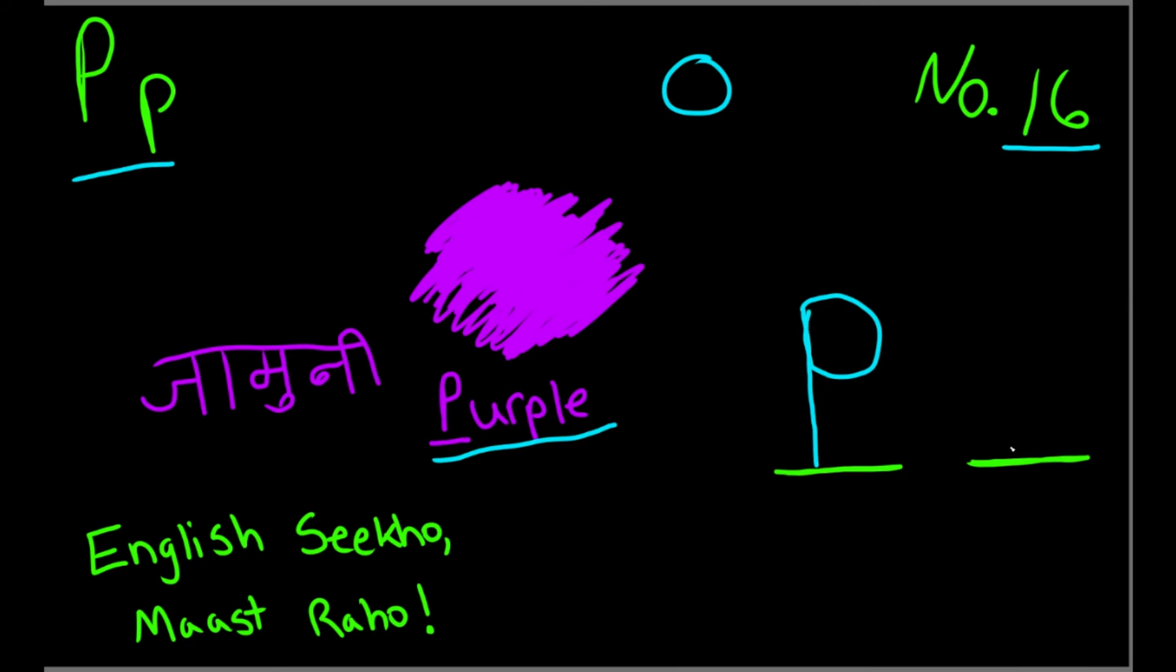When we have to make a small p, it is also easy. We will make a small line like this, then make a small circle here. And it is done.